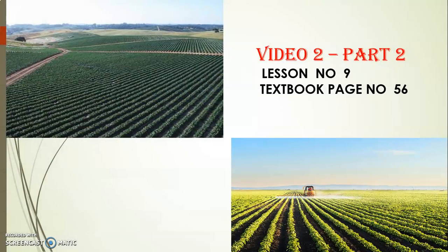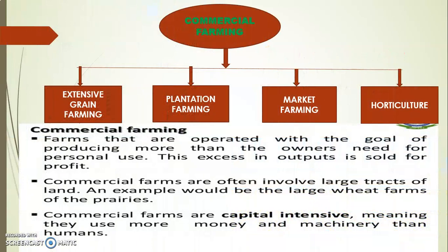Welcome back students, let us continue with Lesson 9, Video 2, Part 2. In the first part we completed page 55, where we studied subsistence farming, intensive farming, and shifting cultivation. Now we are going to begin with page 56 from our textbook, where we will study commercial farming. In commercial farming we are going to study four subtopics: extensive grain farming, plantation farming, market farming, and horticulture.